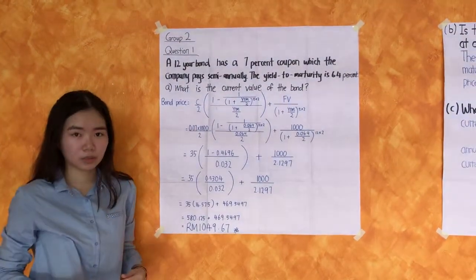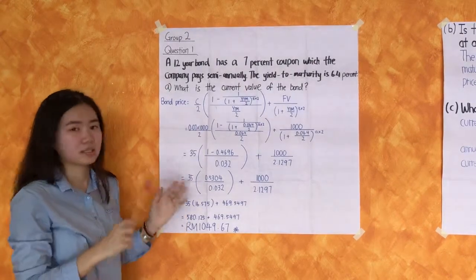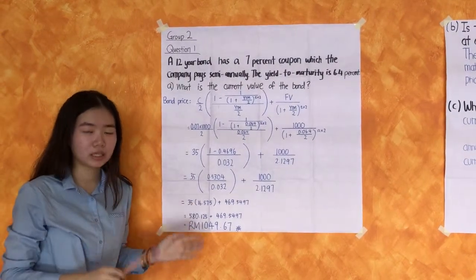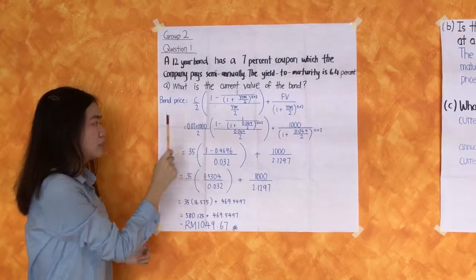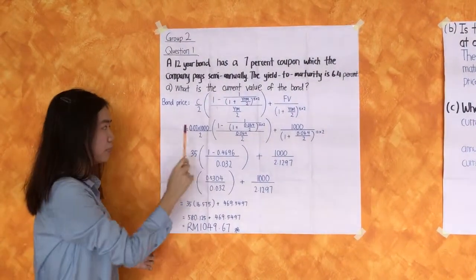The YTM also divided by 2, but the times is times 2 because the company pays 2 times annually. So 0.07 times 1000 divided by 2...